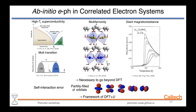Finally, ab initio electron-phonon interaction in correlated electron systems. For correlated systems — relevant to high-Tc superconductivity, Mott transitions, multiferroicity, giant magnetoresistance — the standard workflow cannot be used because DFT fails to capture the ground state. A major reason is self-interaction error from partially filled d-orbitals. One route to mitigate this is Hubbard-corrected DFT, i.e., DFT+U.